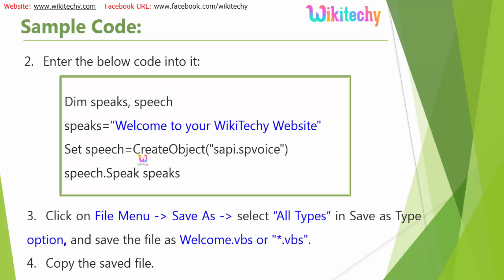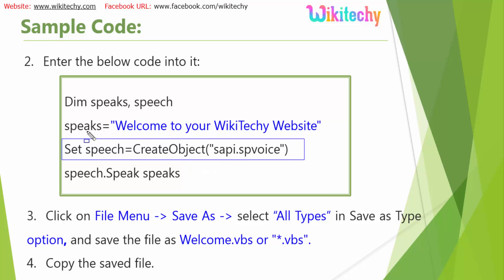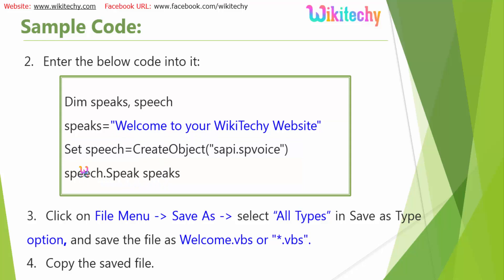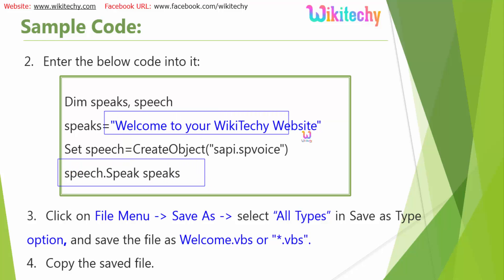I am creating an object: Speech is equal to CreateObject of this particular library. This library will take care of giving voice. Then, Speech.Speak(Speaks) — this line will produce speech from the text you have given in the program.